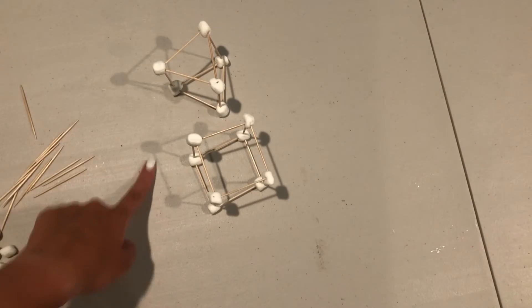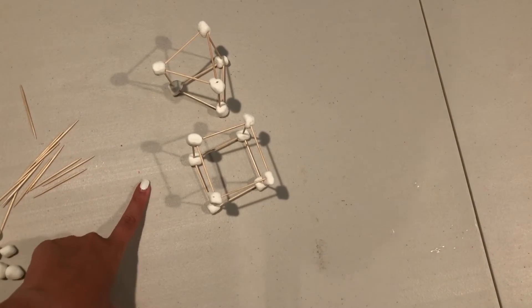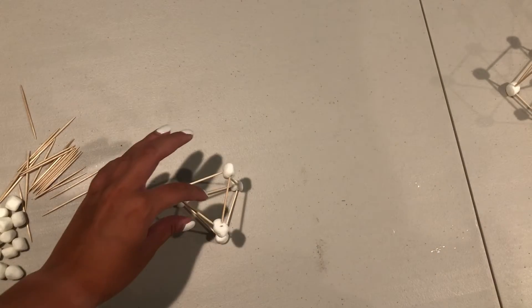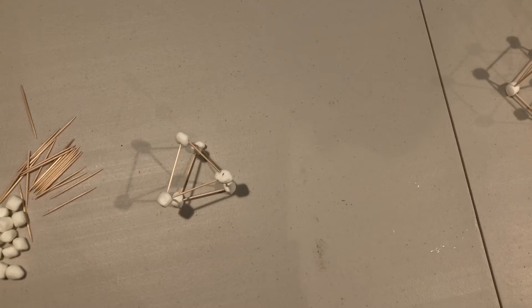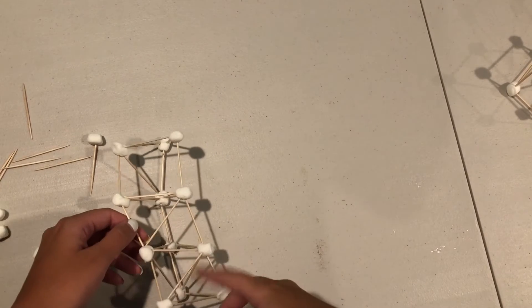Now choose whatever shape you think is more sturdy and build your tower out of that. I chose a triangle, so now continue building this up as high as you can and add supports as needed. You can add cross supports like this.